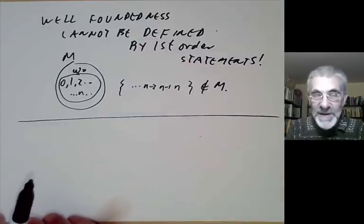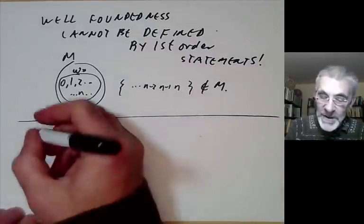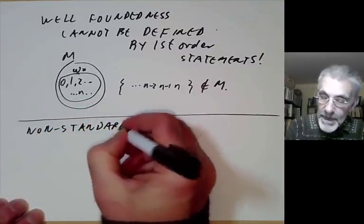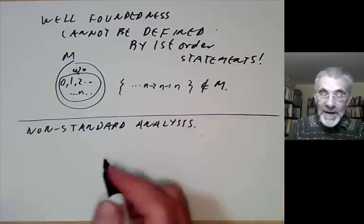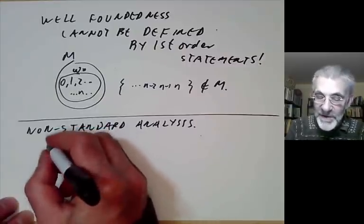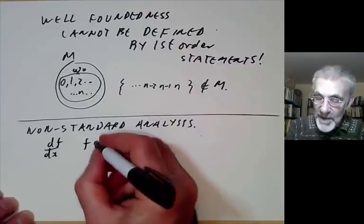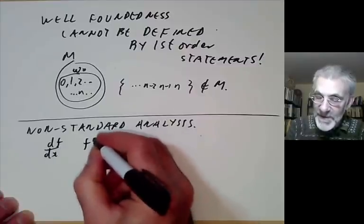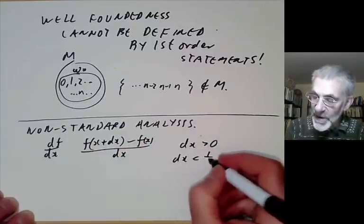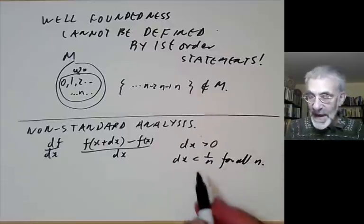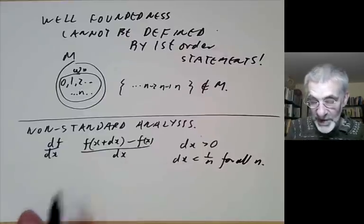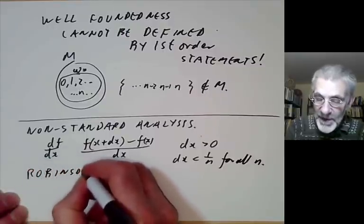What are non-well-founded sets good for, apart from finding bizarre counterexamples? It turns out they are actually useful in non-standard analysis. Analysis in Newton's and Leibniz's time quite often used infinitesimal elements — you define the derivative of a function as [f(x + dx) − f(x)] / dx, where dx > 0 but dx < 1/n for all integers n. This upset people because there's no such real number, so something seemed fishy. Robinson came up with the wonderful idea of making sense of this.